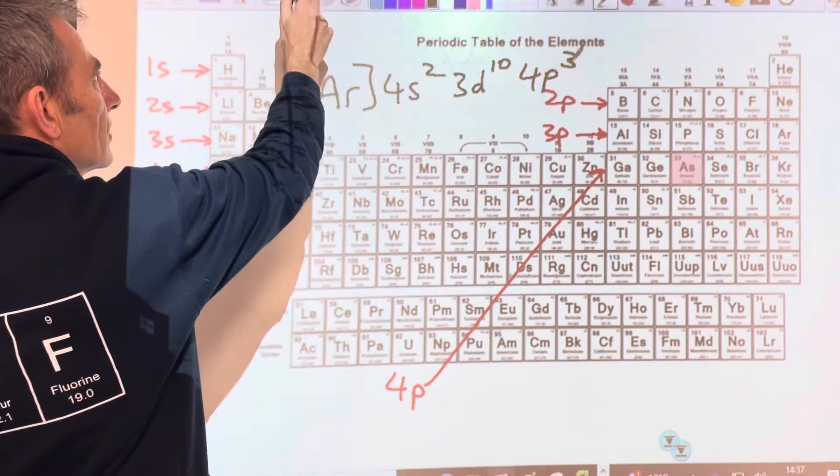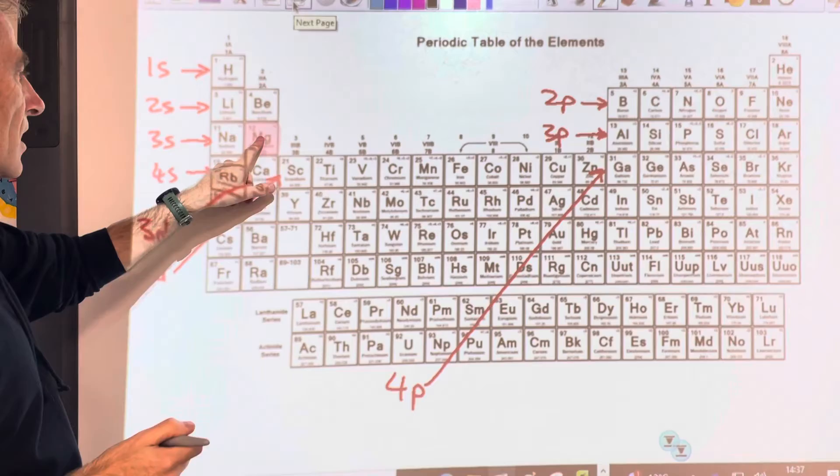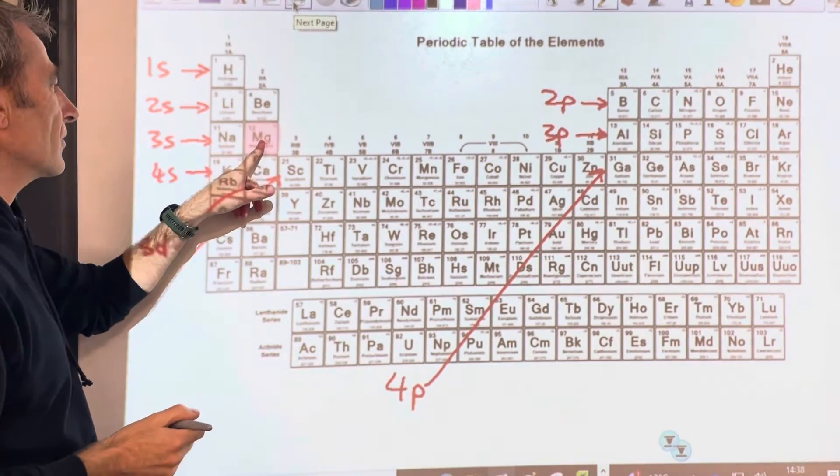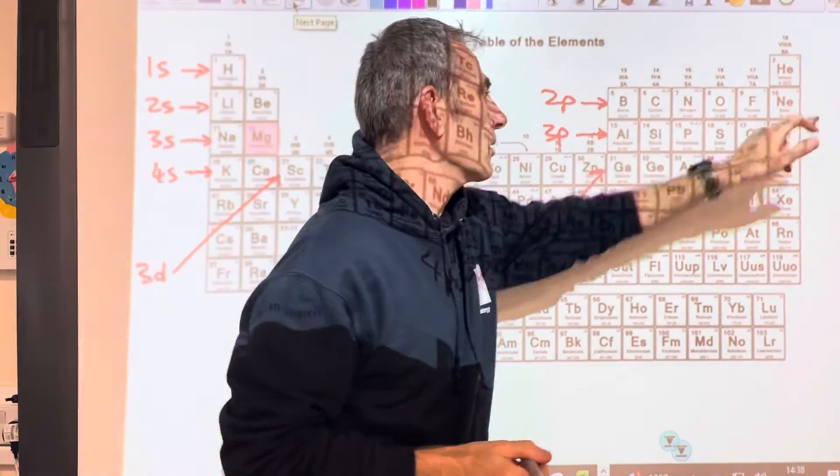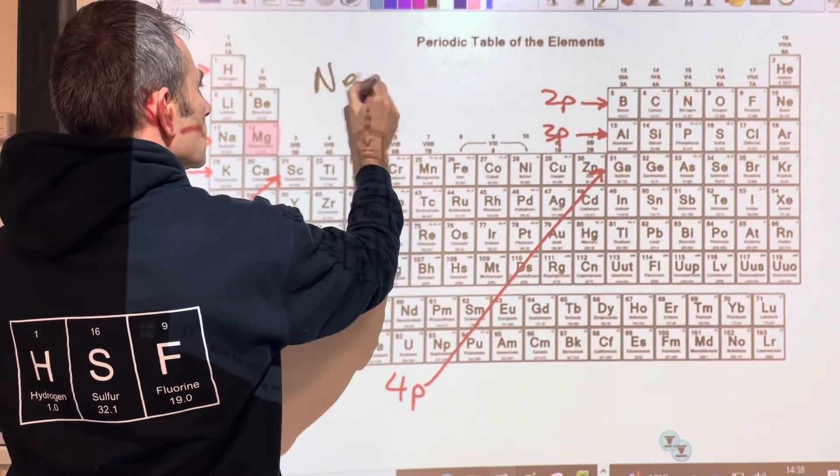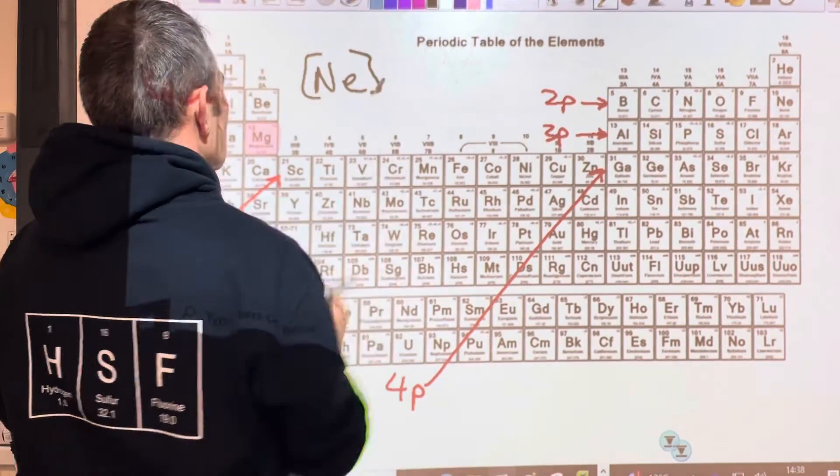So what I've got here, we've got magnesium. So what's the noble gas before magnesium? It's neon. So we'd write neon, or Ne, in square brackets, and then just pick up the sub-shell: three s one two, so 3s².